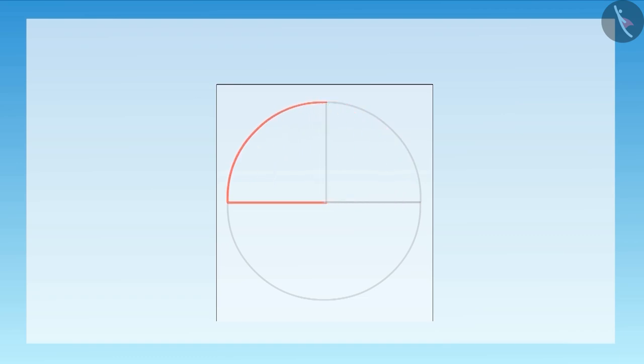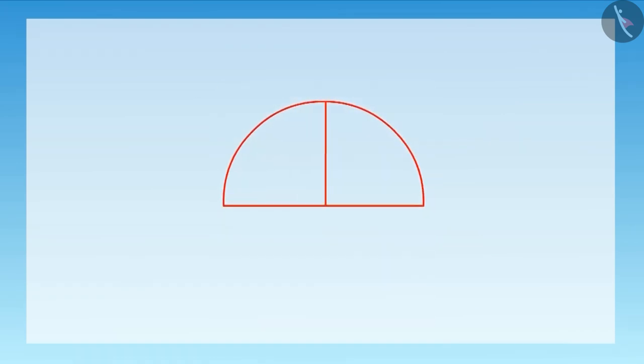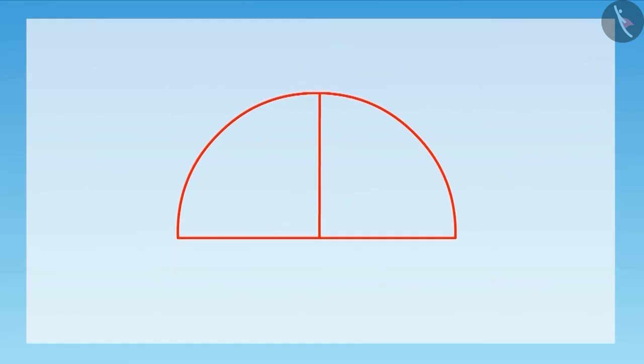Divide that semicircle into two equal parts. You can see that 90 degree and 0 degree angles are being formed here. Now divide both the halves of the semicircle into three equal parts.